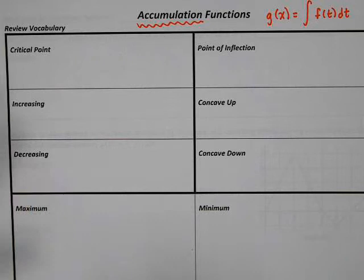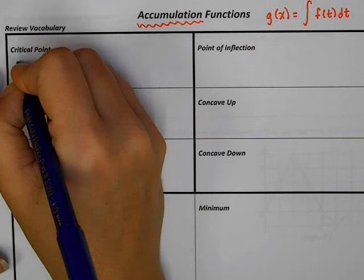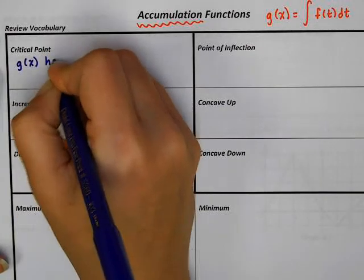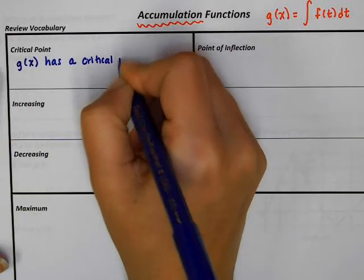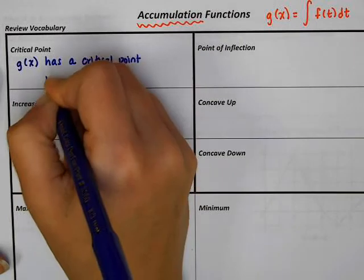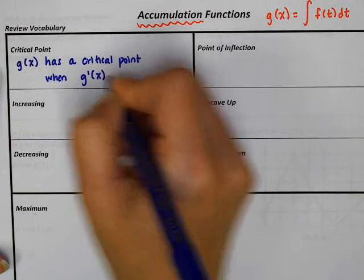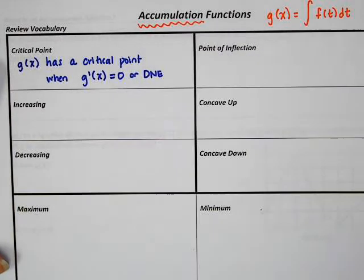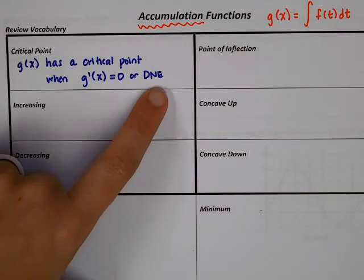A critical point: g of x, the original function, has a critical point when the derivative g prime is equal to 0 or does not exist. So a critical point of the original function can be found by looking at where the derivative is 0 or does not exist.